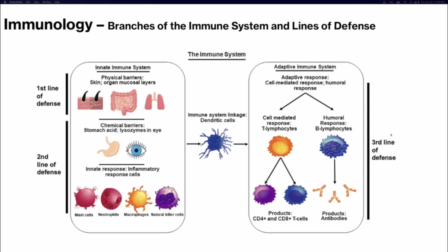On to immunology. Our immune system has two branches — the innate immune system and the adaptive immune system — and three lines of defense. The first line of defense is part of the innate immune system: our physical barriers like skin and mucosa. The second line of defense occurs after the first line is broken and involves the inflammatory response, fever, and different types of chemicals. This is also part of the innate immune system.